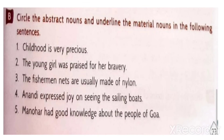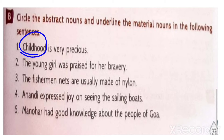Circle the abstract nouns and underline the material nouns in the following sentences. What is childhood? Childhood is an abstract noun, so you have to circle it. The young girl was praised for her bravery.